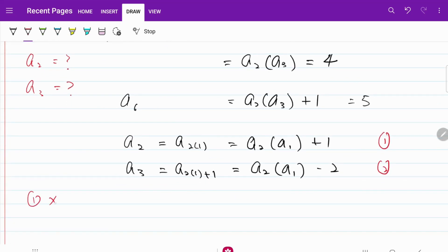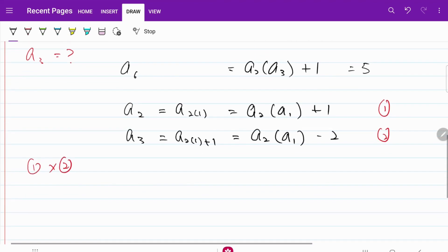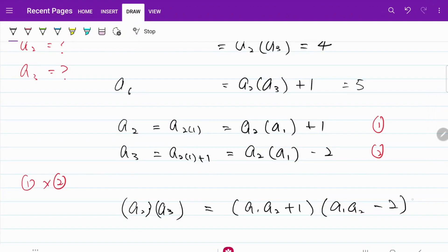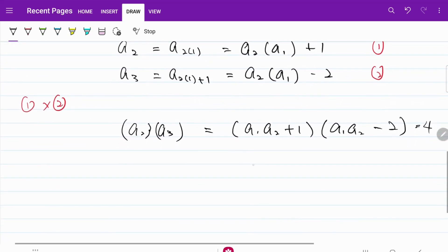If I multiply equation 1 with equation 2, on the left-hand side, I have the product of A2 multiplied by A3, which is equal to (A1·A2 + 1) multiplied by the product of (A1·A2 - 2). We know that A2 times A3 is equal to 4. So let's work out the quadratic equation. I have (A1·A2)^2 - A1·A2 - 6 = 0.